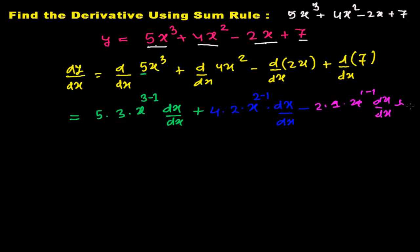We know since many videos that's always 0. So let's add each and every term - so here 5 times 3, that is 15, and x to the 3 minus 1, so x square. And derivative of x with respect to x, that is dx by dx, is 1, so I don't have to write that.